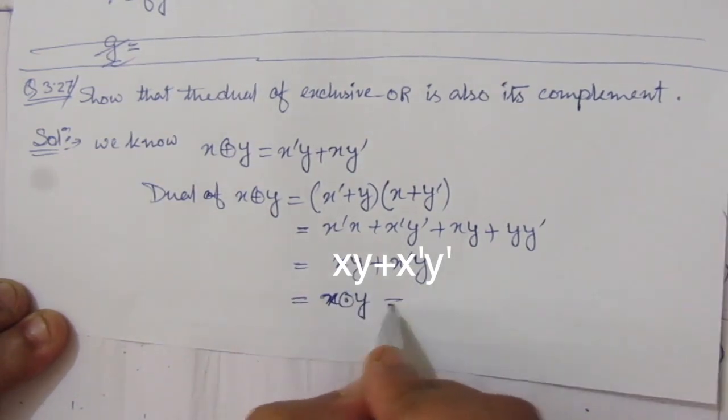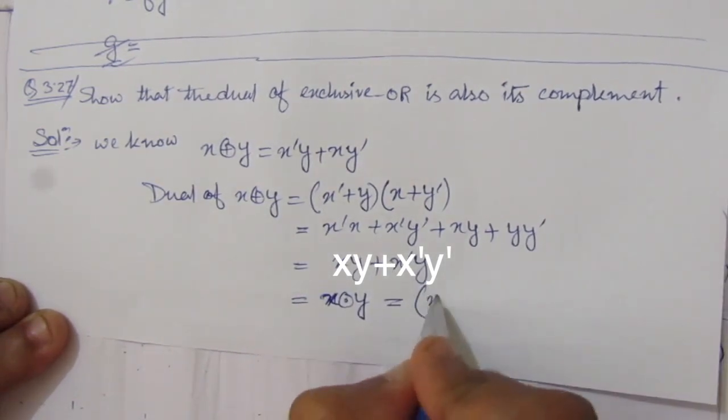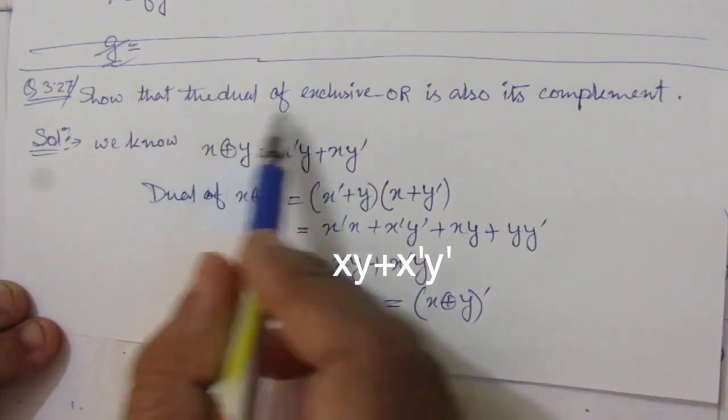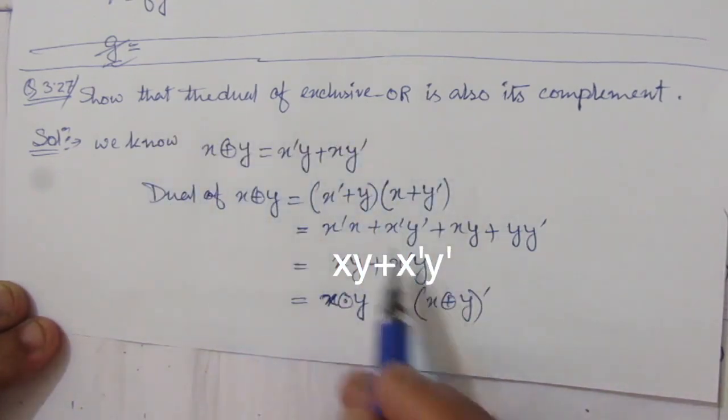That means this is the XNOR gate. So, it is nothing but the complement of x XOR y. So, we have seen that the dual of the exclusive-OR is the complement. That means it is the complement of the XOR gate.